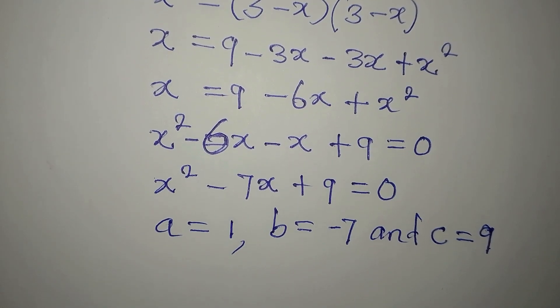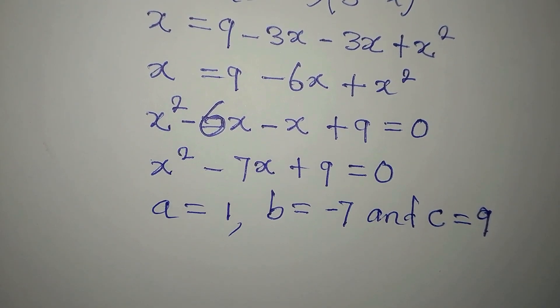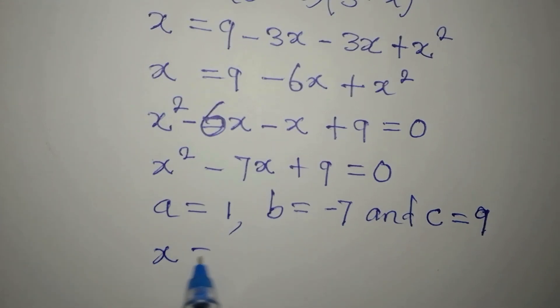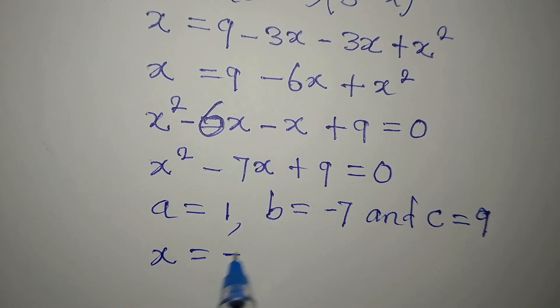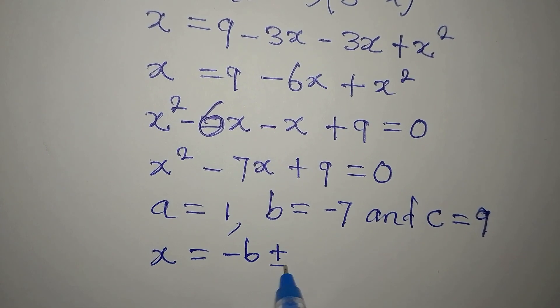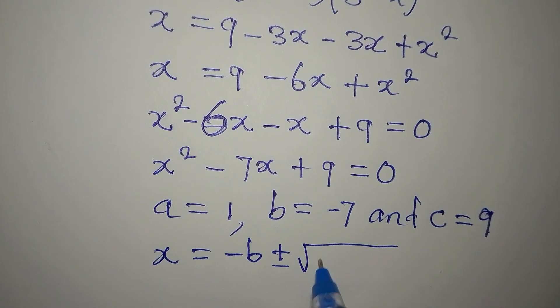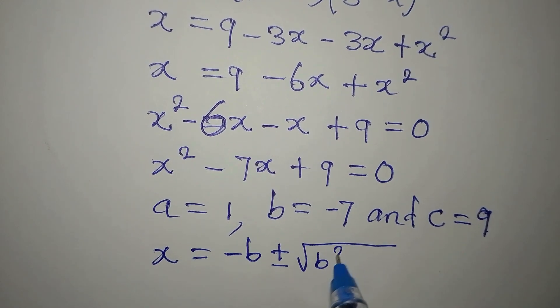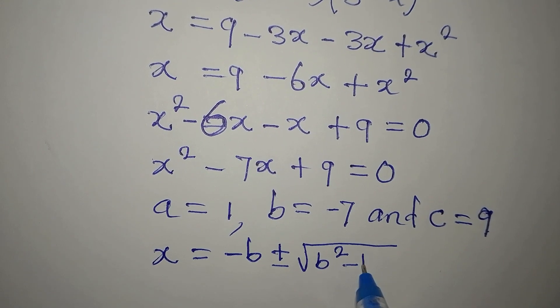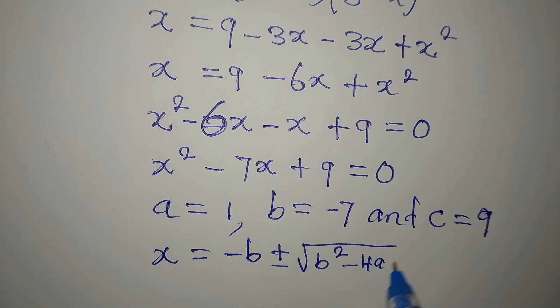The quadratic formula is: x equals negative b plus or minus the square root of b squared minus 4ac, all over 2a.